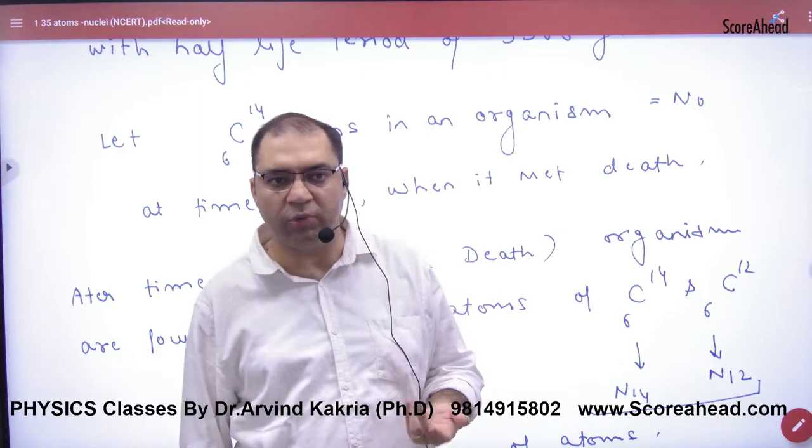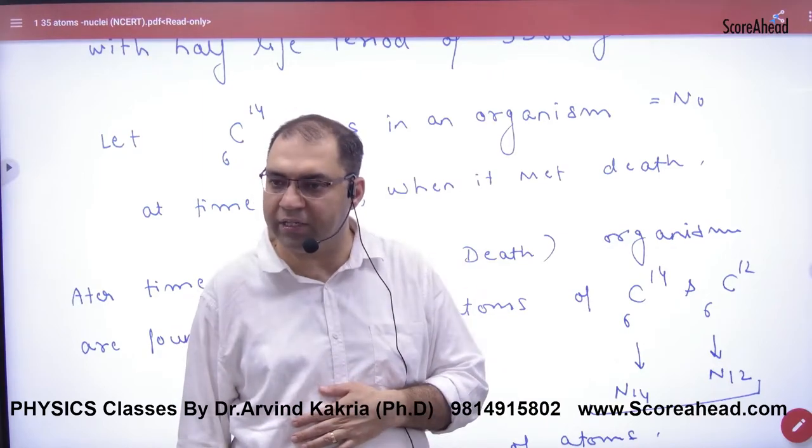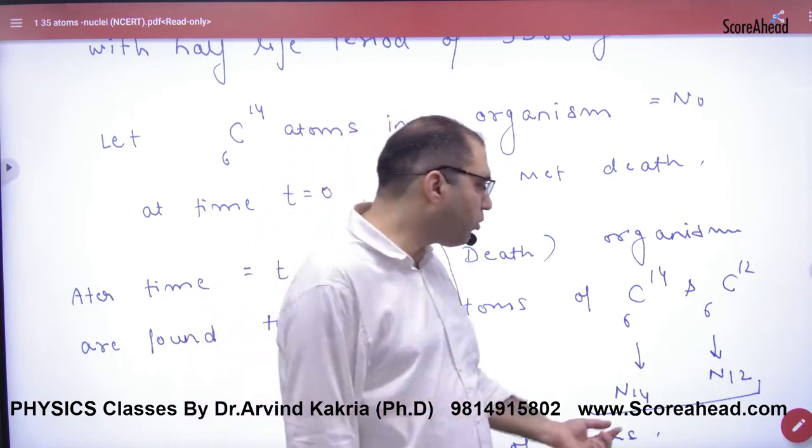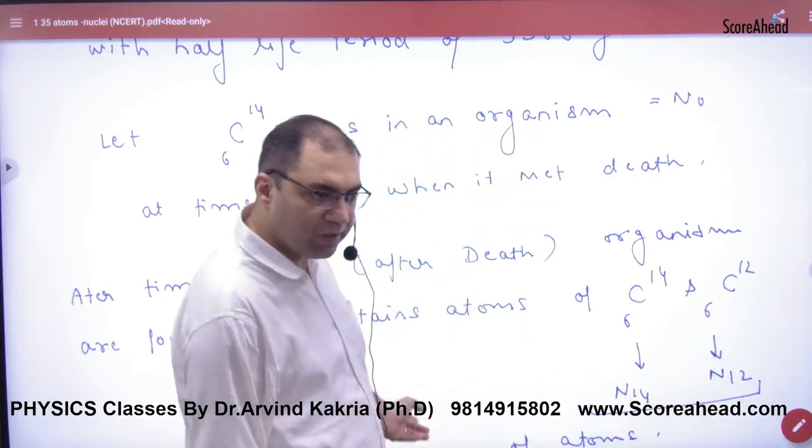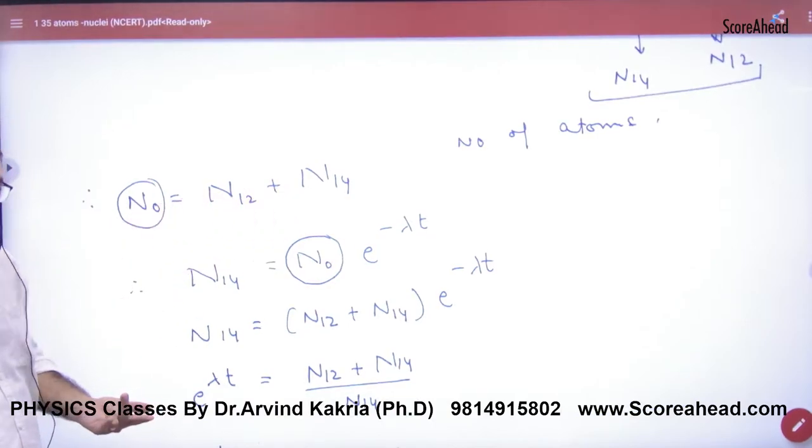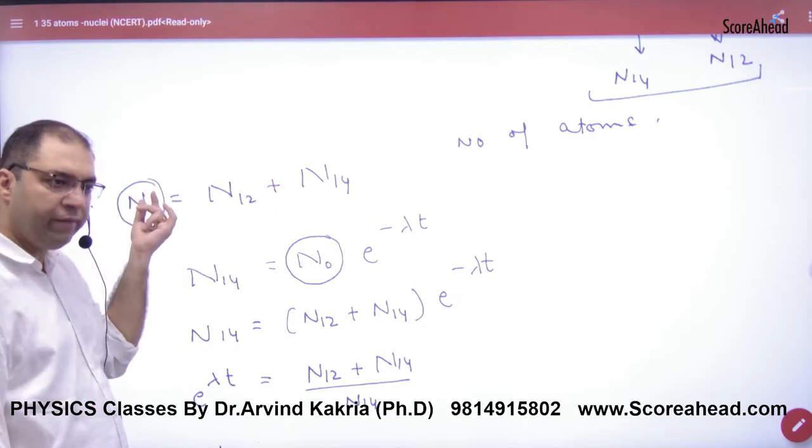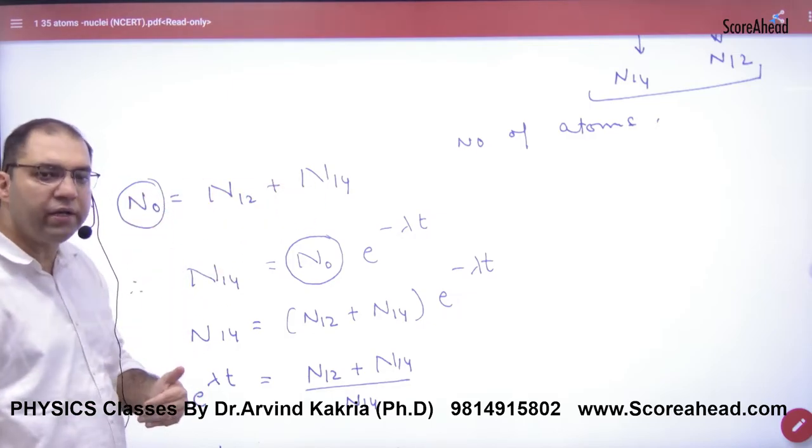Because the energy has been closed, so N0 is N0. Initially number of atoms in Carbon-14 was N0. Now something has become this and something has become this. N0 is equal, at the beginning it was only this, but now this is also, but the total will remain N0.